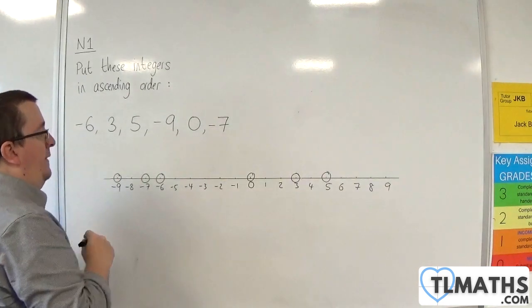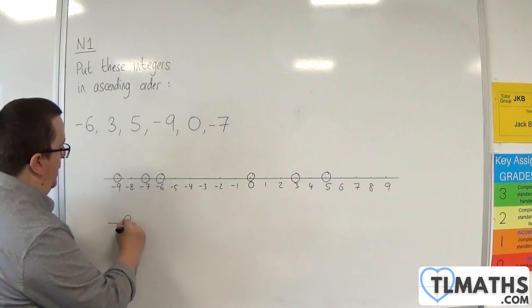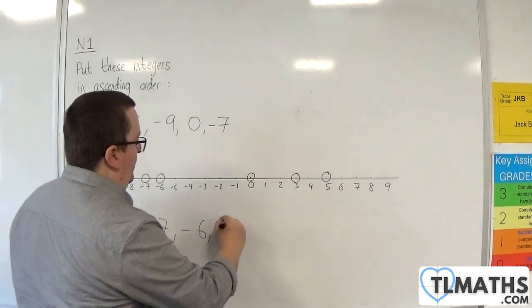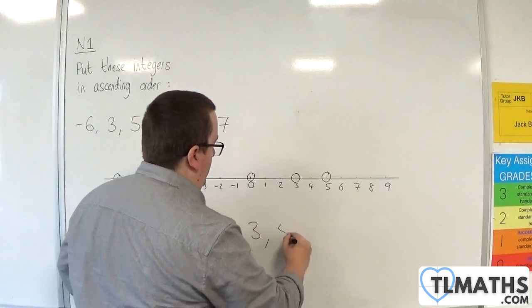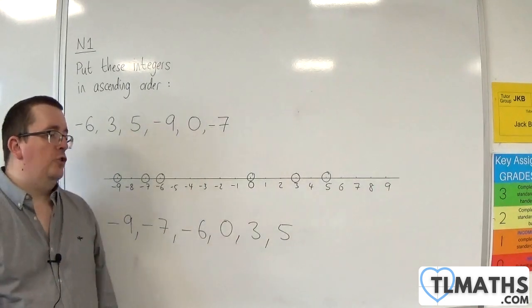So, conveniently, that's actually put them in order. From the smallest: minus 9, then minus 7, then minus 6, then 0, then 3, then 5. So, from the smallest up to the largest.